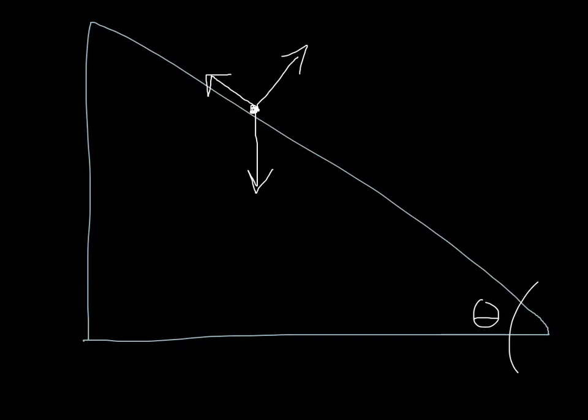Of course, even if the box is moving, the free-body diagram will look pretty much like this because these are the only forces present. It's how the forces relate to one another in terms of their strength that controls whether or not the box is accelerating down the ramp.